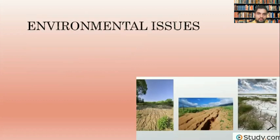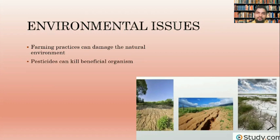Environmental issues are another challenge. Farming practices can damage the natural environment. Pesticides cause damage to the environment and kill beneficial organisms such as pollinators. For crops to develop properly, we need pollinators. If pesticides are used indiscriminately or excessively, they will kill beneficial insects and organisms, and pollination of produce will be significantly reduced.